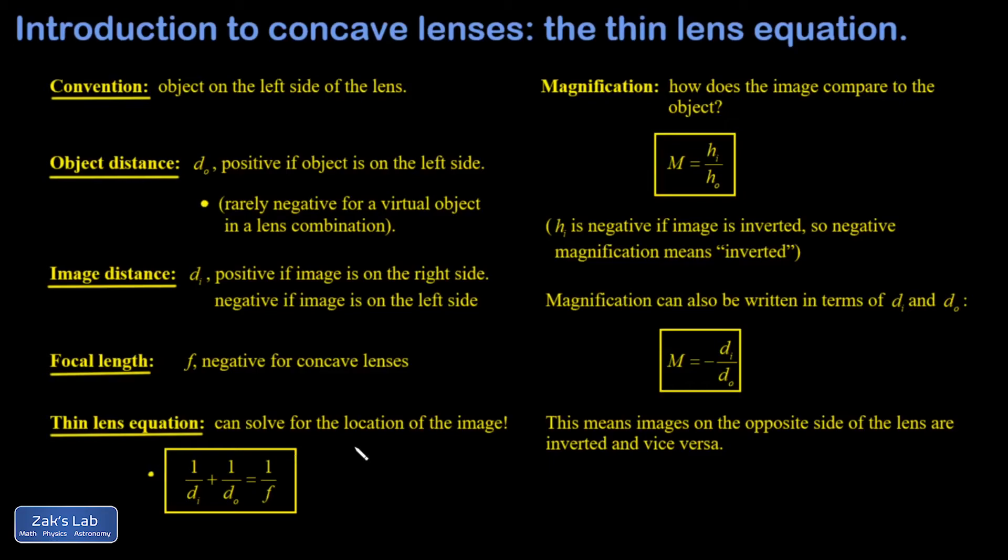That allows us to find the location of our image. Then magnification that tells us how much bigger or smaller our image got. And that's the image height divided by the object height. In other words, if an object shrank to half its size, the magnification would be one half. In addition, the orientation of the image is taken care of in the magnification equation. If an image is inverted, then the height would be called negative.